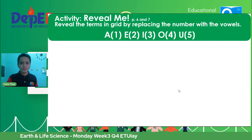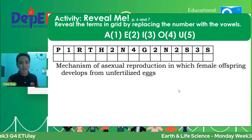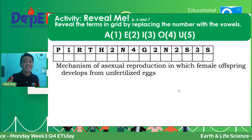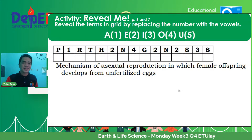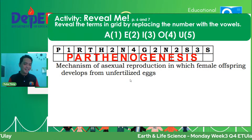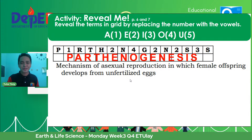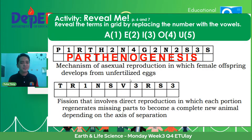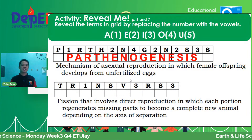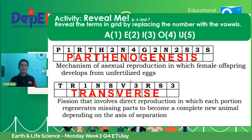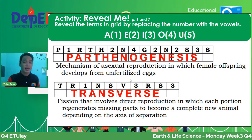So we have fragmentation, binary fission, and budding. Fourth item: a mechanism of asexual reproduction in which female offspring develops from unfertilized eggs — kahit walang partner na male, kaya pa rin magreproduce ang organism. That is parthenogenesis. Fifth: a type of fission involving direct reproduction in which each portion regenerates missing parts to become a complete new animal depending on the axis of separation — that is called transverse fission.